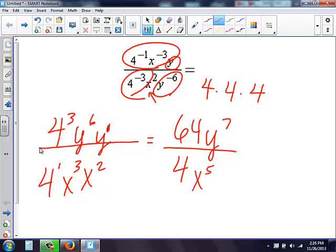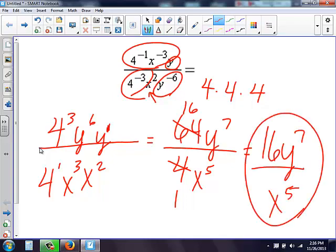Now I notice, I look at my numbers 64 and 4, those still can be simplified. Therefore, I know that 4 goes into 4 one time. 4 goes into 64, 16 times. Therefore, I'm left with 16, y to the seventh on top, and an x to the fifth on bottom. So you need to keep going all the way until you can simplify. Always look at your answer and say, can I simplify it any farther?